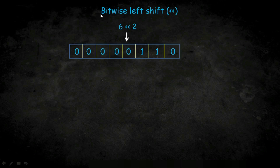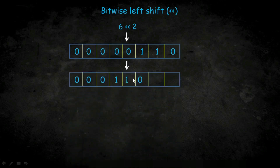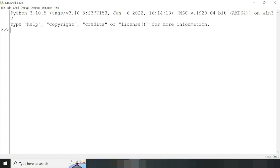Our next bitwise operator is bitwise left shift. We have six and its binary representation. Left shifting six by two bits means two blocks from the left are deleted, two new blocks are created on the right side and filled with zero. We then calculate the equivalent decimal number, which gives 24. Practically, we write six, then the left shift operator, then two, and the answer is 24.